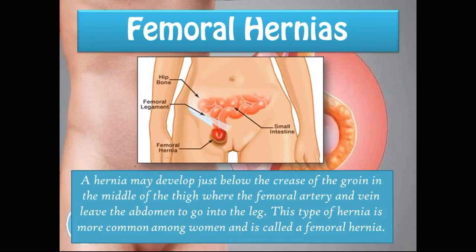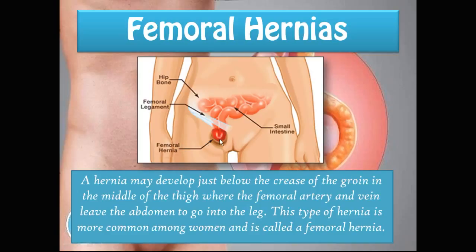A hernia may develop just below the crease of the groin in the middle of the thigh, where the femoral artery and vein leave the abdomen to go into the leg. This type of hernia is more common among women and is called a femoral hernia. You can see in the picture that at the point where the femoral artery and vein leave through that canal, the small intestine has protruded through.